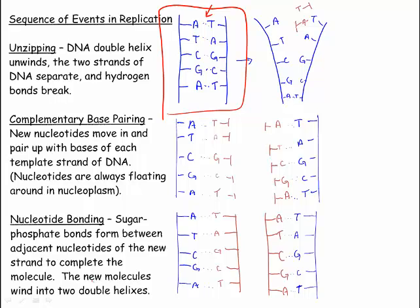In the next stage, complementary base pairing, new nucleotides move in and pair up with the bases of each template strand of DNA. This is possible because nucleotides are present in the nucleoplasm at all times.